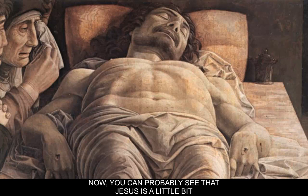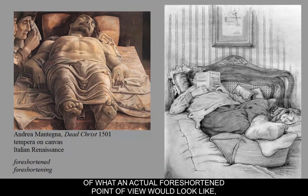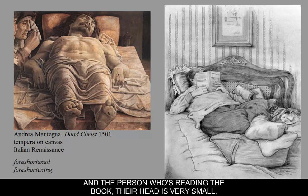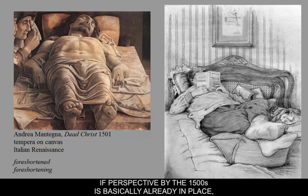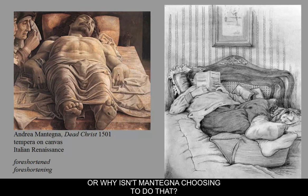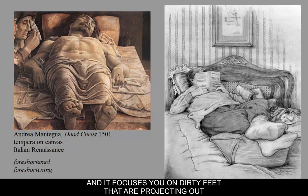You can probably see that Jesus looks a little strange in terms of the foreshortening. I found a student drawing of what an actual foreshortened point of view would look like — things closer to the front of the picture plane are considerably larger, so the feet are super big and the head is very small in comparison. Mantegna doesn't choose to do that. If perspective by the 1500s is basically already in place and they really understand foreshortening, why isn't Mantegna choosing to do it accurately? Probably the reason is out of respect for the viewers — making the feet huge in the face of the viewer is a weird thing and focuses you on dirty feet projecting out towards you. So this distortion is probably done out of politeness to the viewer.